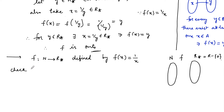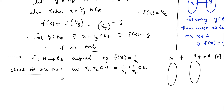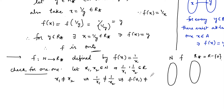Check for one-to-one: let x₁, x₂ ∈ ℕ. Then 1/x₁, 1/x₂ ∈ ℝ*. For x₁ ≠ x₂, this implies 1/x₁ ≠ 1/x₂, that is f(x₁) ≠ f(x₂). So clearly no two distinct elements will have the same image, and therefore f is one-to-one.